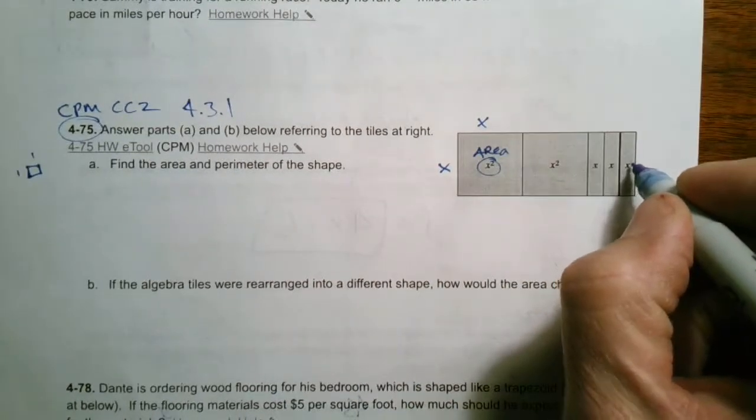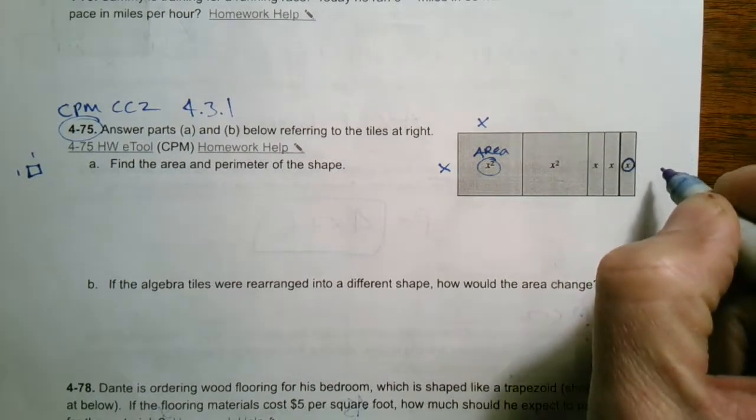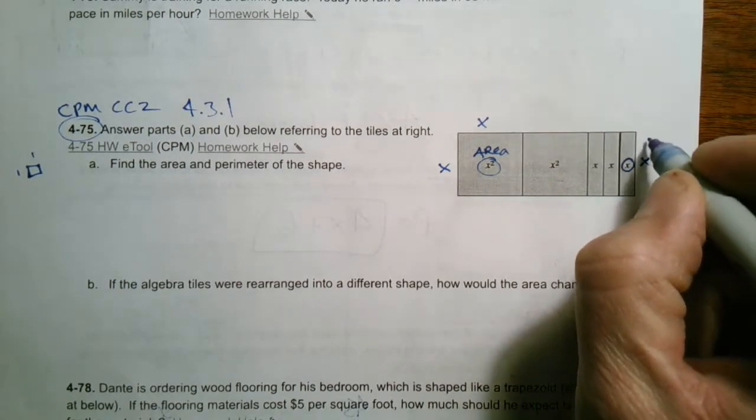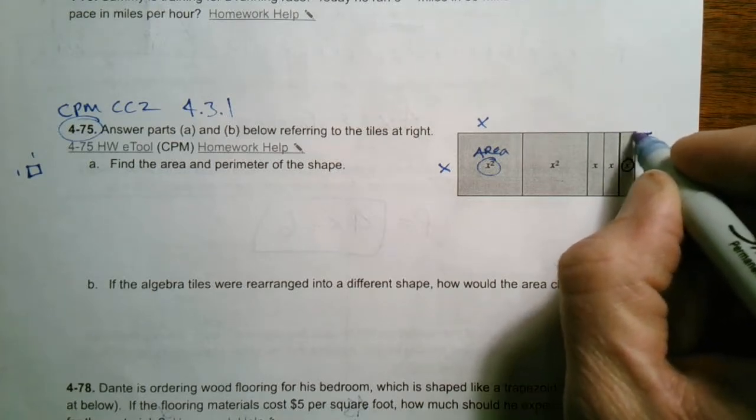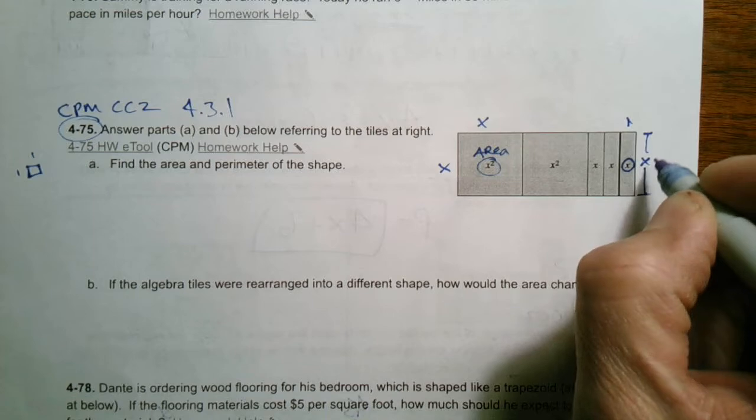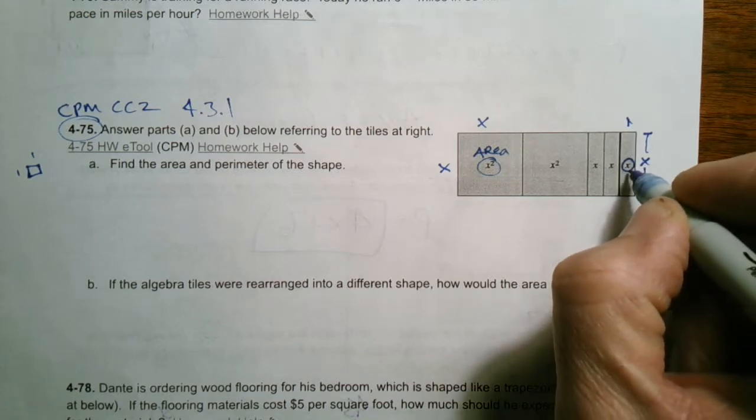And then the x-tile, its area is also x. Why is that true? Because its dimensions from here to here are x, and then the top piece there is 1. So 1 times x is x. So that's also its area is x.